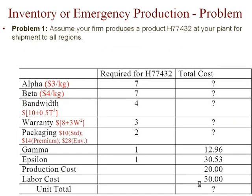Now let's look at a few problems to understand some of the aspects associated with inventory or emergency production decisions. Let's start with the first problem where we assume that the firm produces a product H, which is hyperware 77432. It's been produced at your plant for shipment to all regions. We are required to calculate the total cost associated with this particular product. These question marks are the places that we have to fill in.